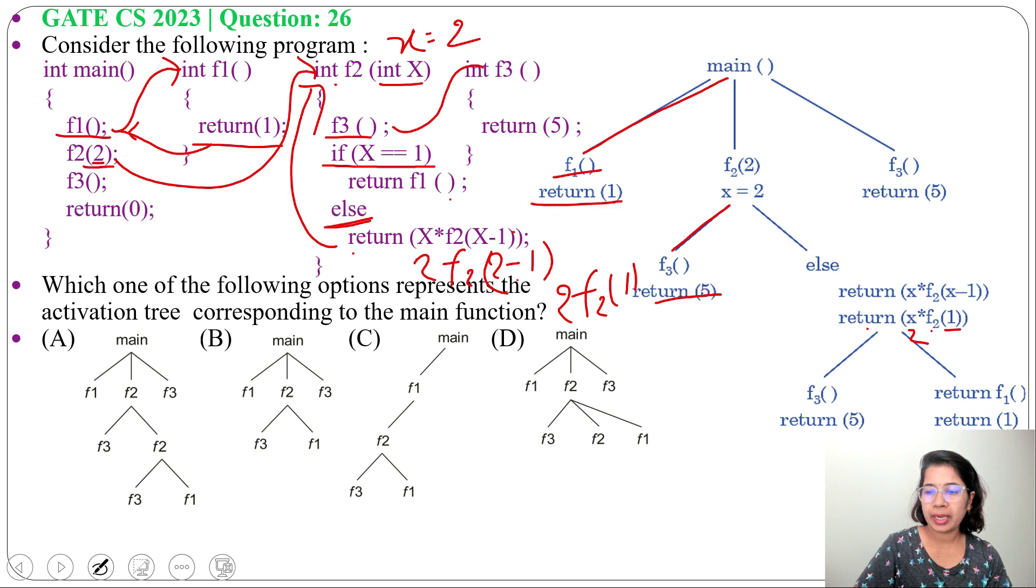Then inside F2, again F3. F3 will return 5. Then if X equals to 1. This time X value is 1. So we will call F1 and F1 will return 1. Now we will go to main function.